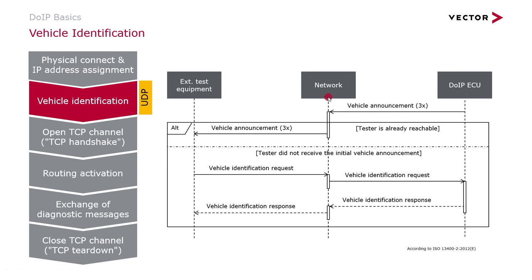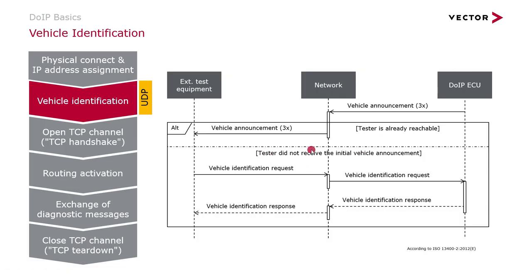Depending on the network status, this vehicle announcement will be forwarded to the tester. Depending on whether the tester received this vehicle announcement or not, it will send a vehicle identification request, and the DoIP ECU will answer if it received this request. This whole communication sequence is performed using the UDP protocol.